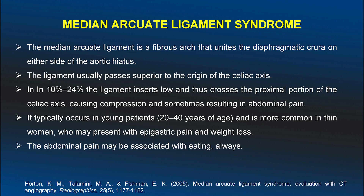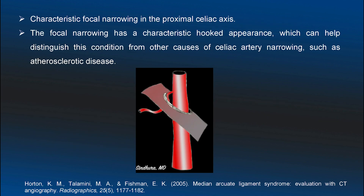Abdominal pain is generally associated with the postprandial phase, which is a classical history given by patients with median arcuate ligament syndrome. The characteristic proximal narrowing of the celiac axis with a hooked appearance can be clinching in diagnosing this condition.